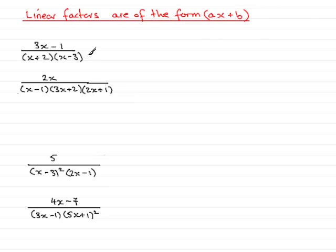And in this particular example, you'll notice in the denominator we have two factors, and they both have that particular form ax plus b. We have a 1x plus 2 here, so a would be 1 and b would be the 2. And in this one, 1x minus 3, a would be 1 and b would obviously be minus 3.